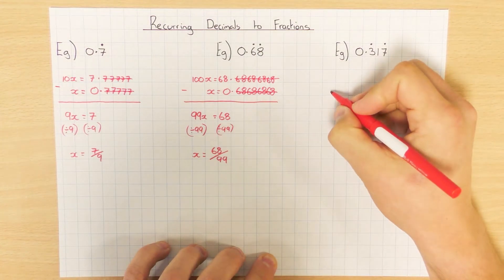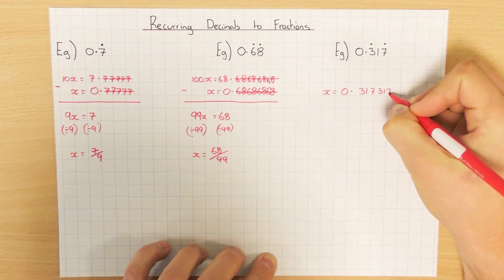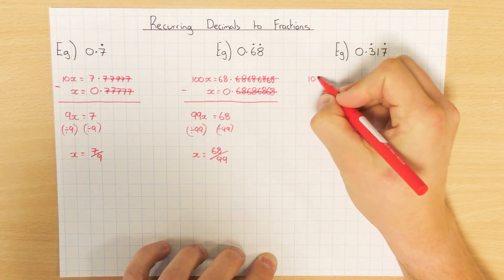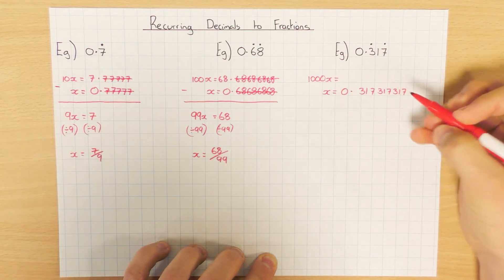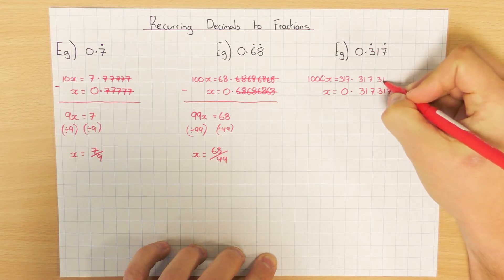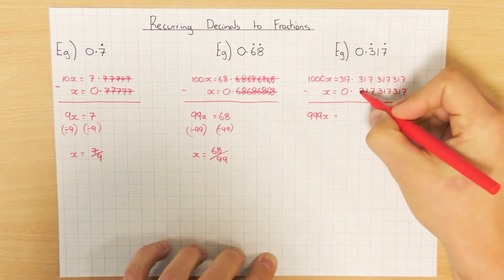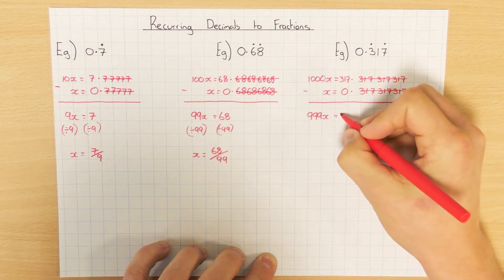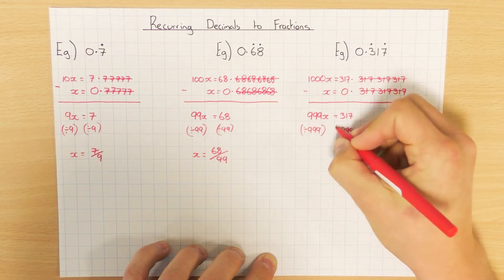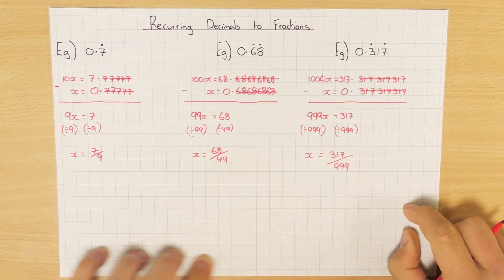Let's have a go at this one when three numbers are reoccurring — it's exactly the same method. Set it equal to x: 0.317317317 and so on. This time because three numbers are reoccurring, I'm going to times this by 1000. All the numbers move three across, giving me 317.317317317. Take them away, which leaves me with 999x, and 317 take away 0 is 317. Divide both sides by 999, therefore x equals 317 over 999.